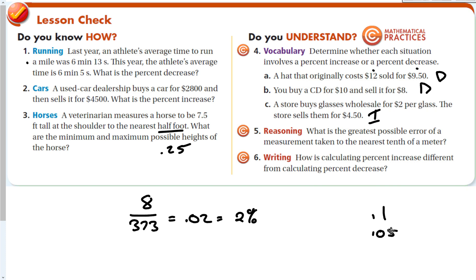The greatest possible error of a measurement taken to the nearest tenth of a meter would be five hundredths (0.05) — half of one tenth, or 0.1 divided by 2. Calculating percent increase is not really different from percent decrease: as long as you remember the numerator must be positive, just subtract the numbers in a way that gives a positive result, or take the absolute value. And that is percent change expressed as a percent.